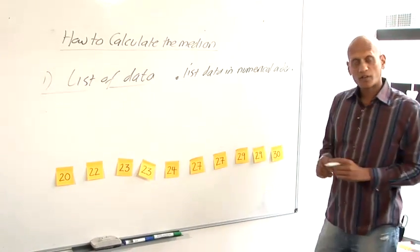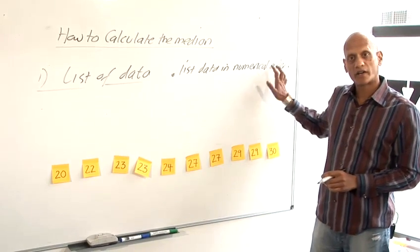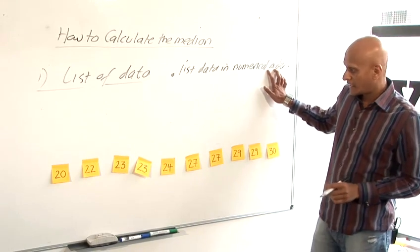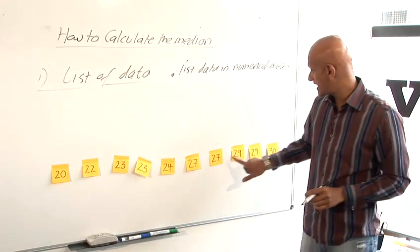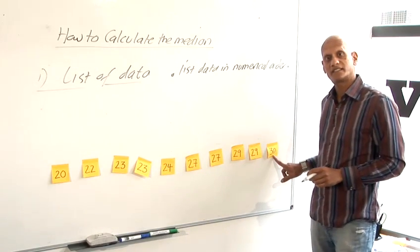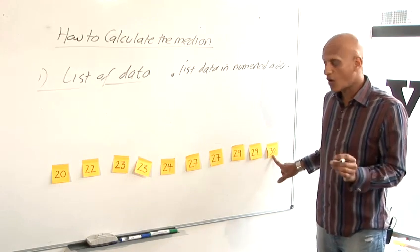Once we've done that, we want to find the median, which is the middle one in the numerically ordered list. Now here I've got one, two, three, four, five, six, seven, eight, nine, ten pieces of data. And you might think that the middle one would be the fifth one, but that's wrong.